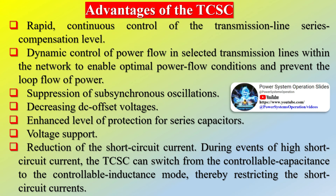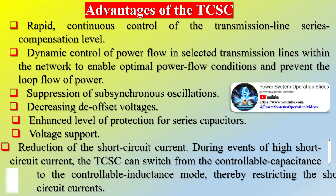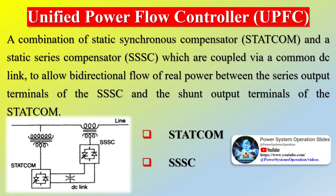SVC controls establish three identical shunt admittances, one for each phase. Consequently, with unbalanced system voltages, the compensating currents in each phase would become different. It is possible to control the three compensating admittances individually by adjusting the delay angle of the TCRs so as to make the three compensating currents identical. However, in this case the triple harmonic content would be different in each phase and their normal cancellation through delta connection would not take place.